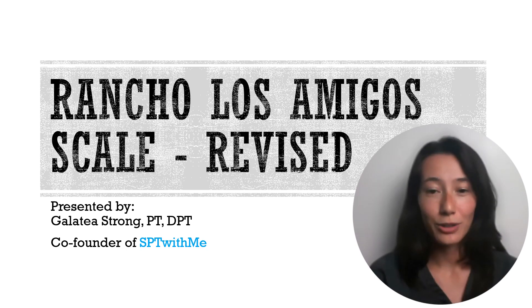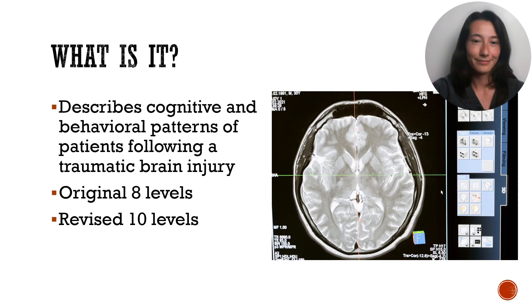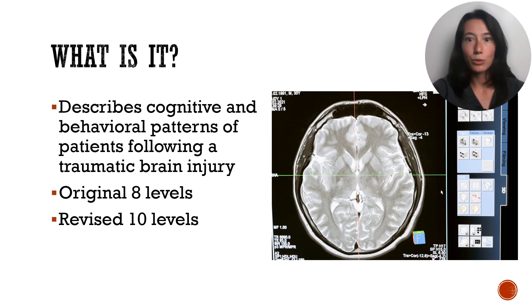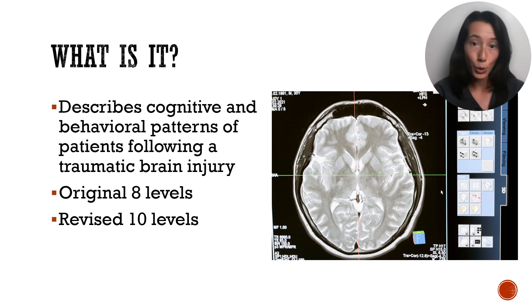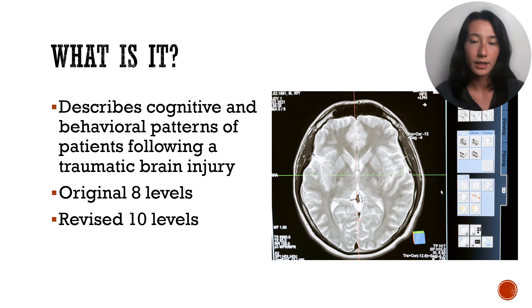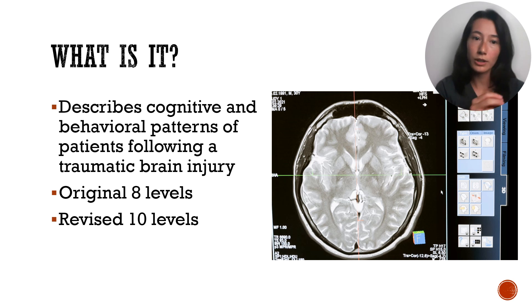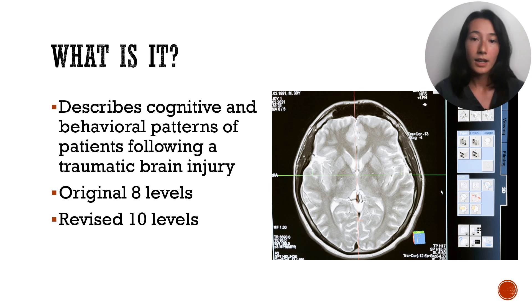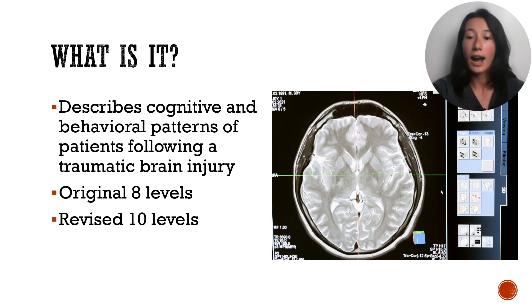Let's talk about the Rancho Los Amigos Scale Revised. The Rancho Los Amigos Scale, also known as the Rancho Scale, is a scale used to qualitatively describe the level of both cognitive and behavioral patterns of patients who have had a traumatic brain injury, a TBI. Two versions have been published — the original in 1972 and the revised, which we'll be discussing today, in 1997. This revised edition added two more levels to more accurately describe and consider the patterns of those who are higher level.